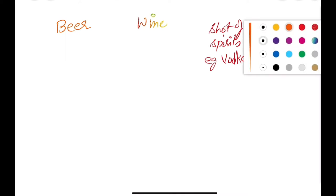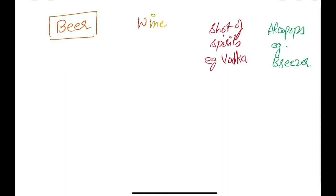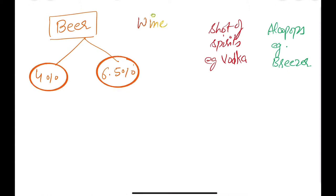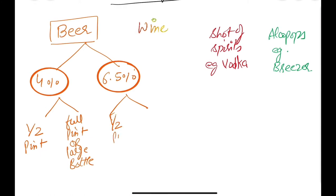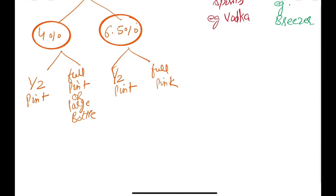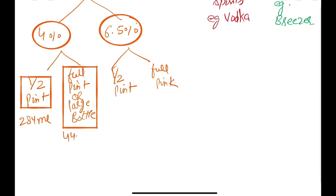First, let's talk about beer. A bottle of beer comes in two concentrations: 4% which is mild, and 6.5% which is strong. Beer can also come in two sizes: half pint and full pint, or a large bottle. Half pint is on average 284 ml, and full pint or large bottle of beer is around 440 ml.